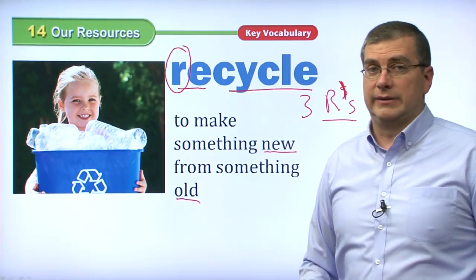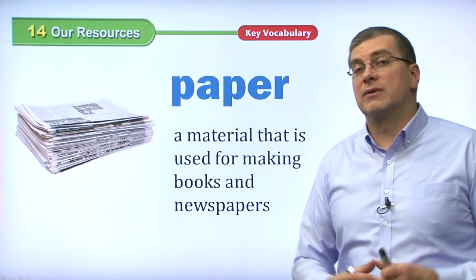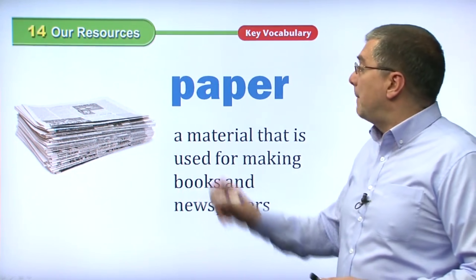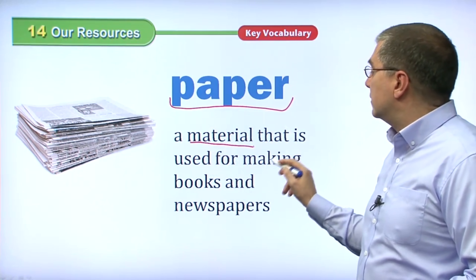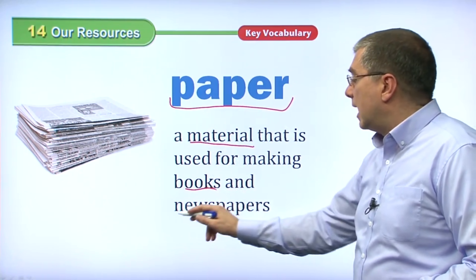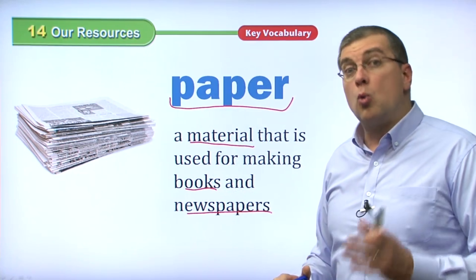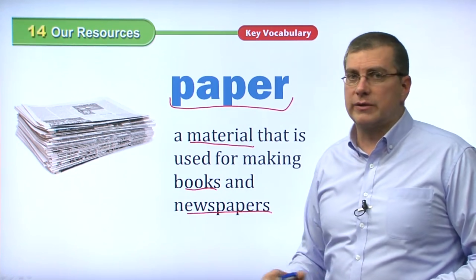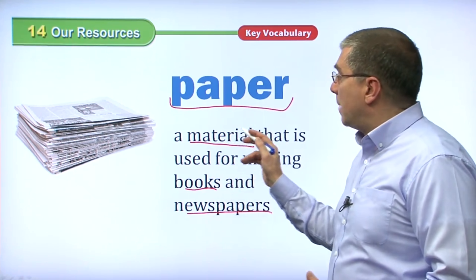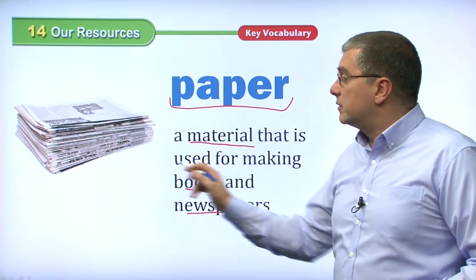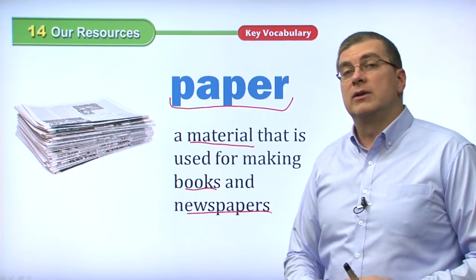Let's talk about some types of natural resources. Paper is a resource — it's a material used for making books and papers. Of course, paper isn't really a natural resource itself; wood is the natural resource, but we make paper from wood. We use it for newspapers, which is very common, and we also use it for books.